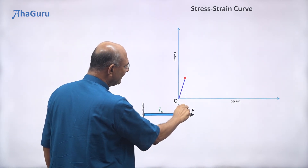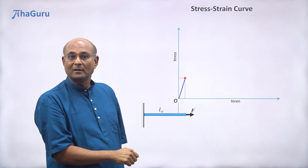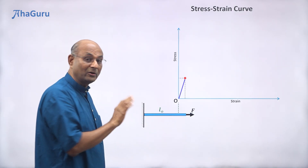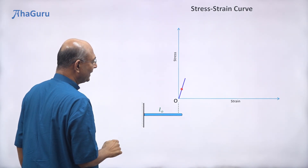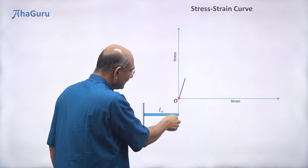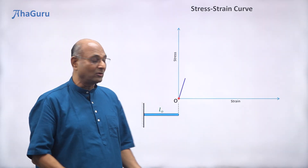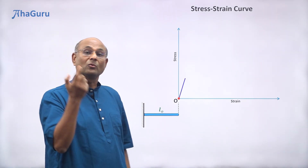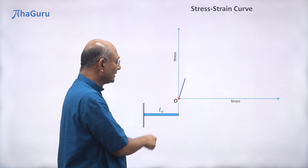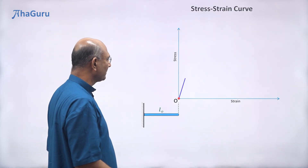If I release the force, stress becomes zero and strain becomes zero. The rod goes back along that straight line and returns to its natural length L-naught. Strain being zero doesn't mean the length is zero — it means delta-L is zero, so the rod has come back to being L-naught.